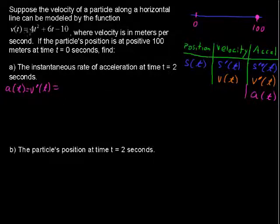First derivative of 4t² is 8t. The first derivative of 6t is 6. And the first derivative of -10 is 0.